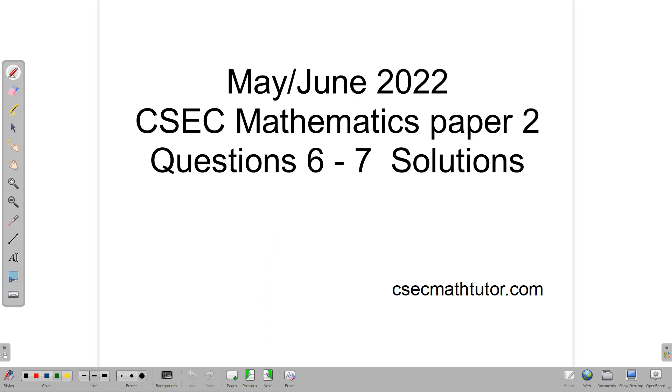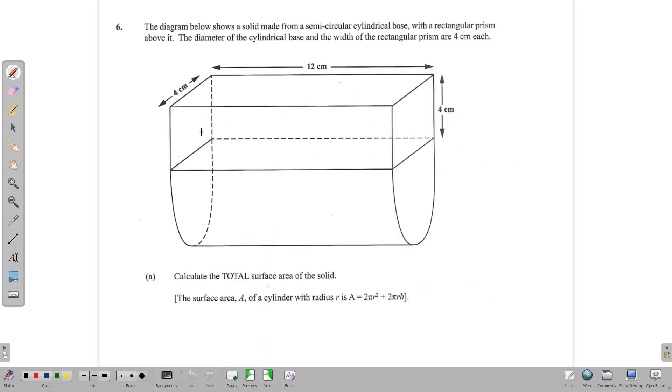We're going to jump straight into it and start with question 6, which is a measurement question. The diagram below shows a solid made from a semicircular cylindrical base with a rectangular prism built on top of it. The diameter of the cylindrical base and the width of the rectangular prism are 4 centimeters. So here is the diameter, it's 4 centimeters, and that's the same thing as the height here and the width here.